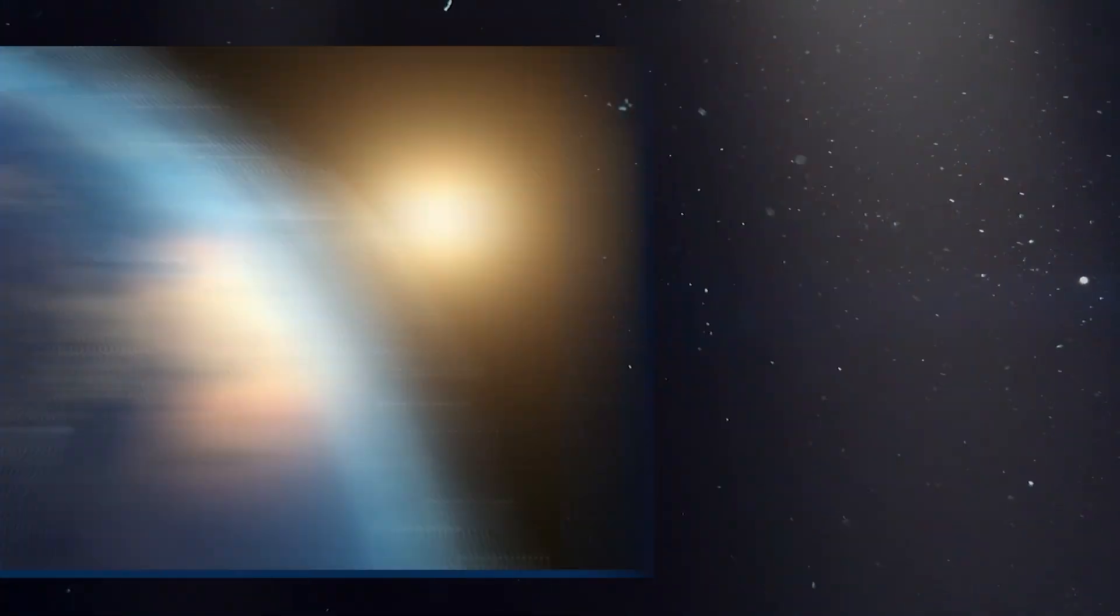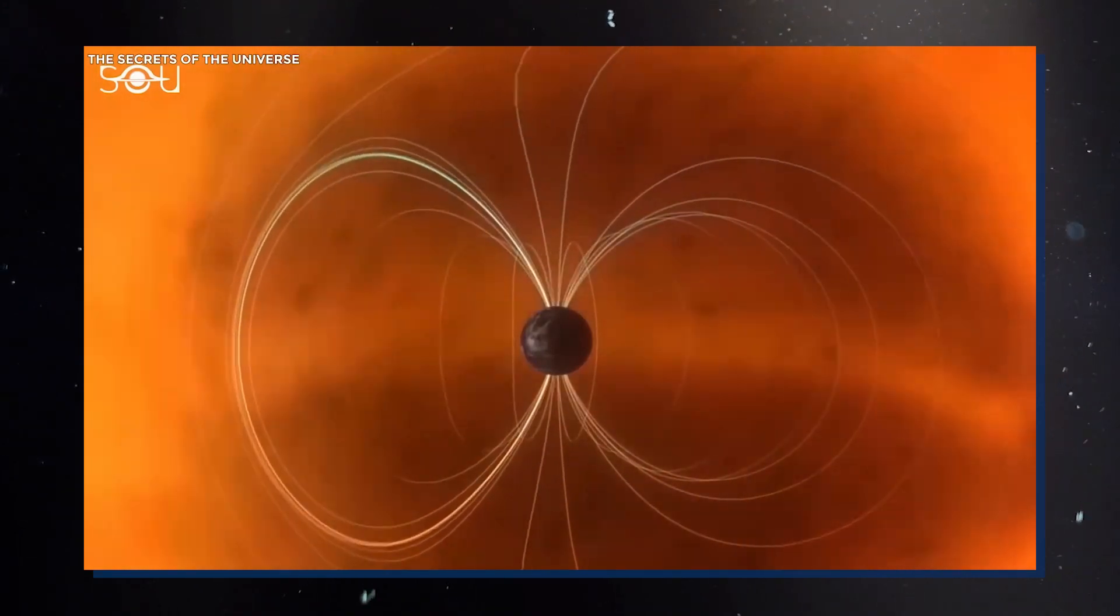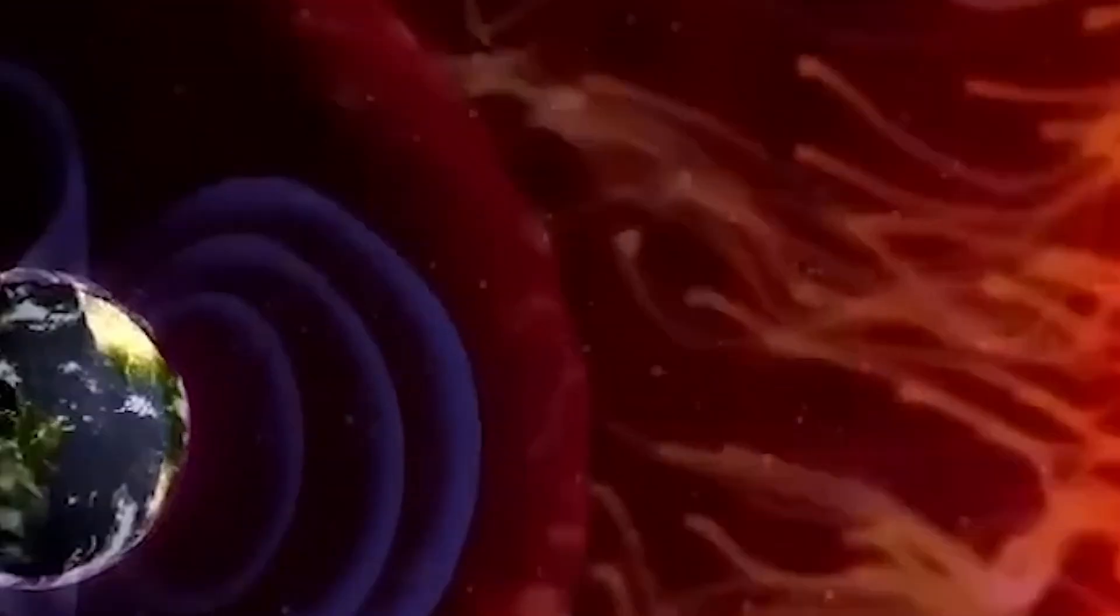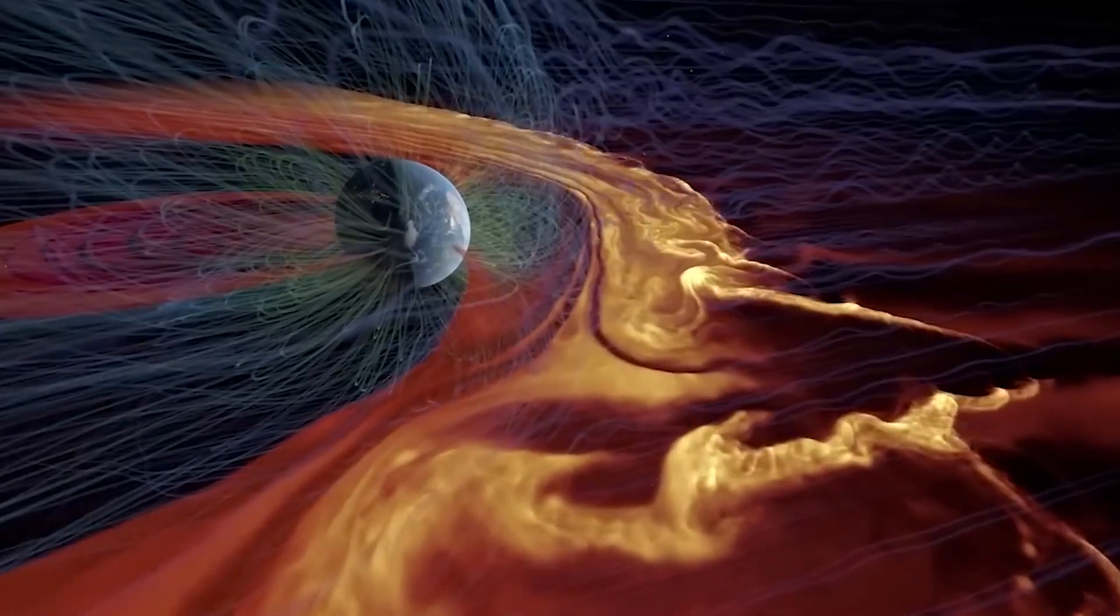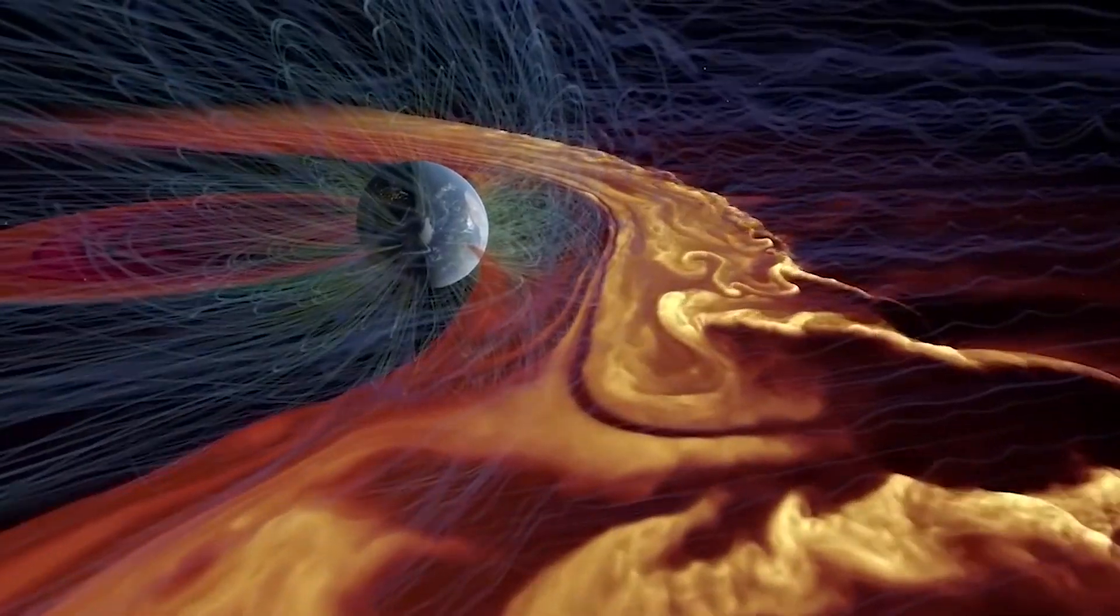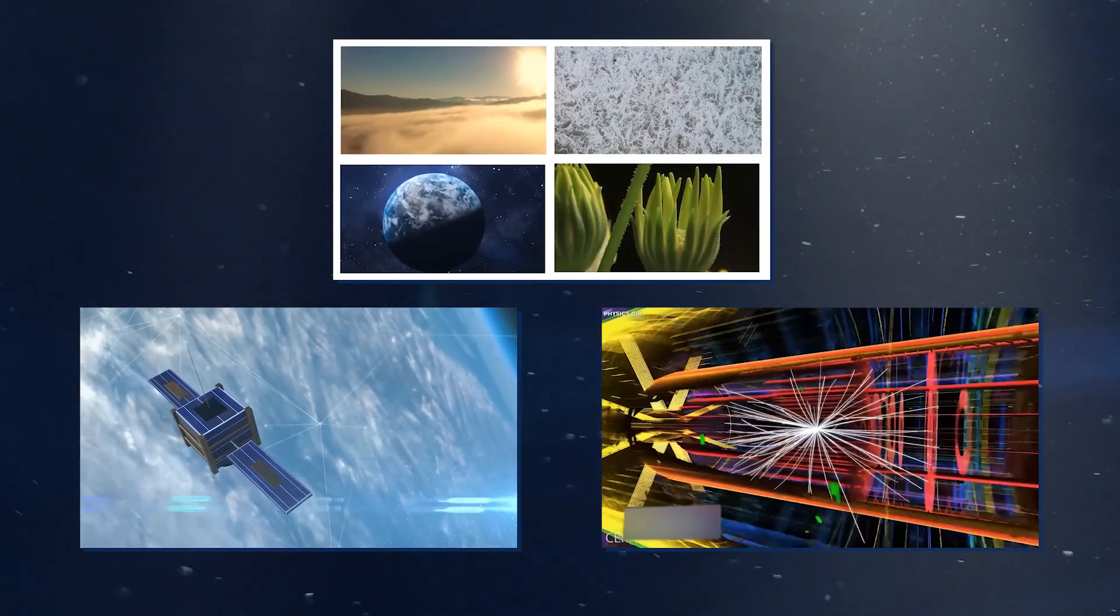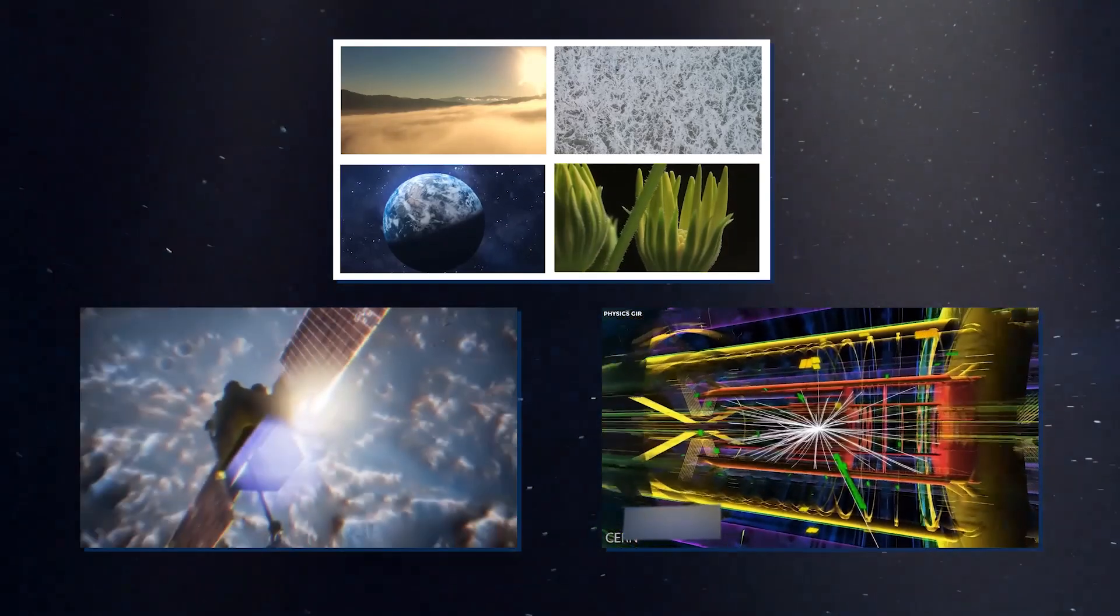The magnetic field, created by the swirling of molten iron within Earth's outer core, is crucial for preserving life on our planet. The crack, extending over a large region, allowed more solar particles to enter Earth's atmosphere, leading to intensified auroras and potential disruptions to satellite communication systems.